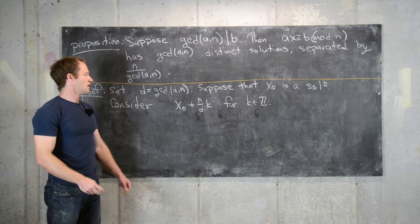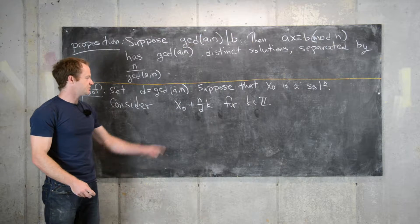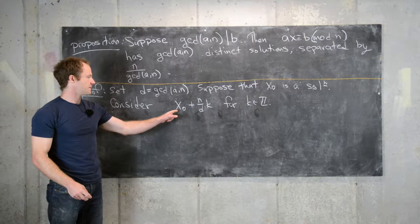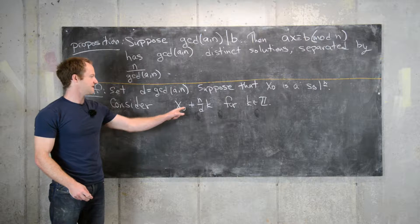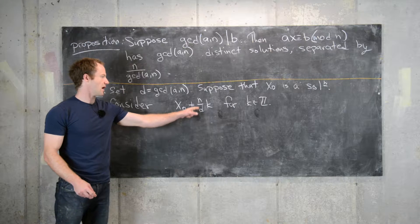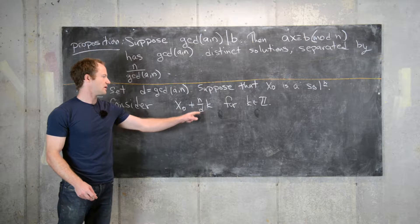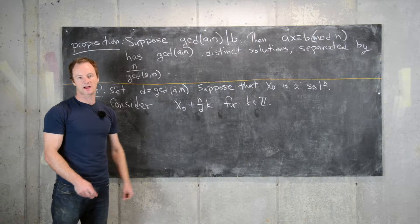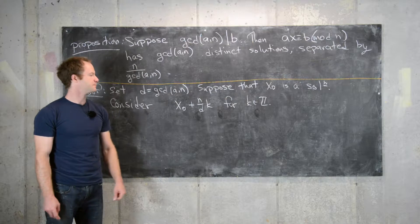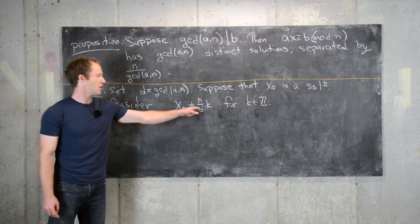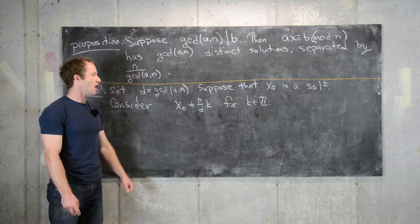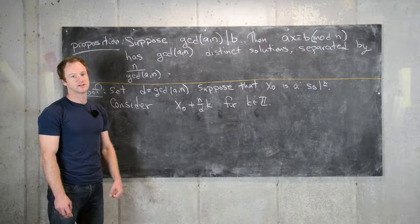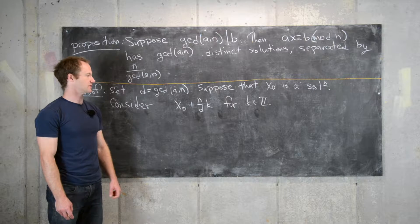These are all integers that are a distance — a multiple of n over d — from x₀. What we want to show is that all of these are solutions to the linear congruence.